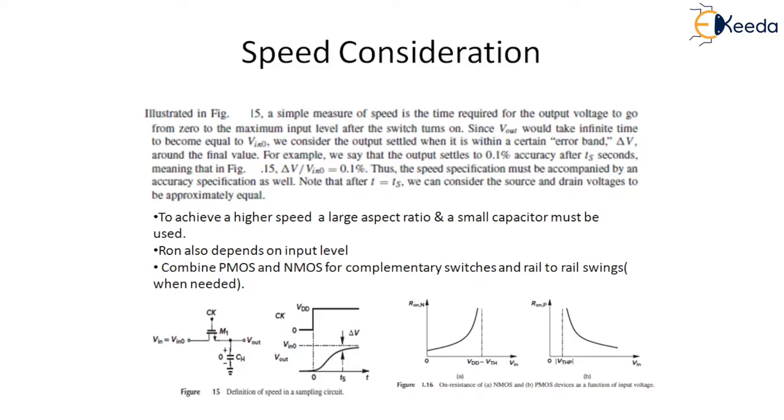The on resistance depends upon input level, which gives a greater time constant for more positive input in case of NMOS switch. NMOS on resistance increases as the input voltage becomes more positive and vice versa, whereas in the PMOS case it has an opposite behavior where it decreases as the input voltage becomes more positive.